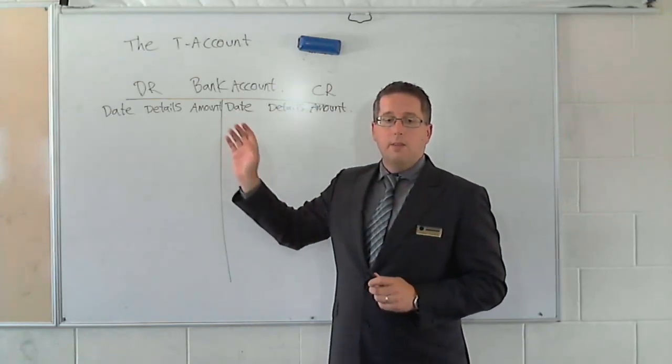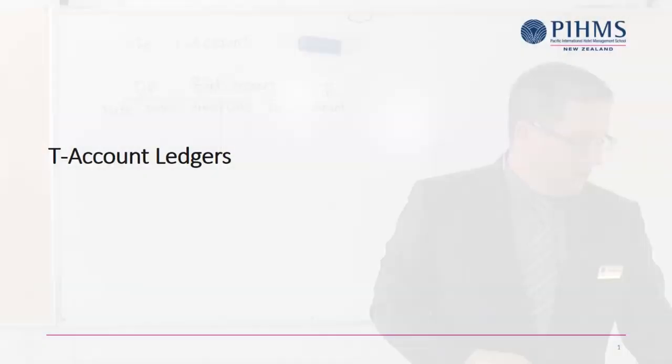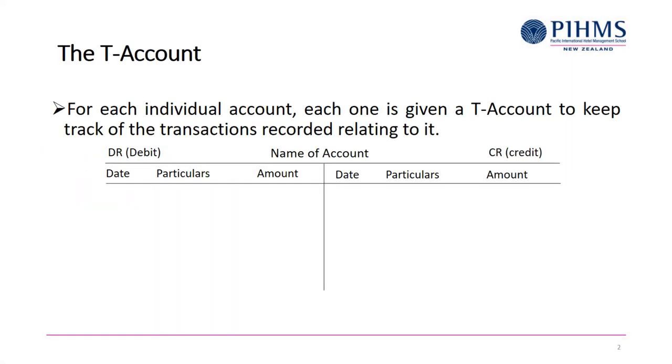So, date, details, and finally, the amount. So, those are the details that we need to record transactions. So, name of account at the top, debits and credits. And then the three parts are date, the details, what particulars are put there, and the amount.